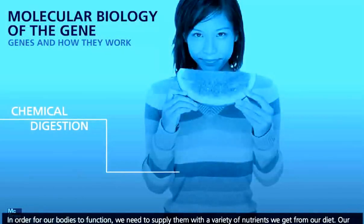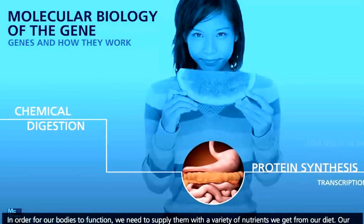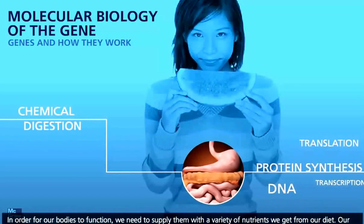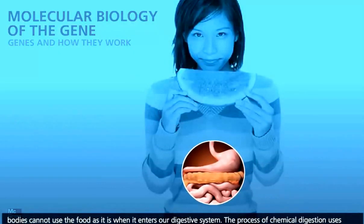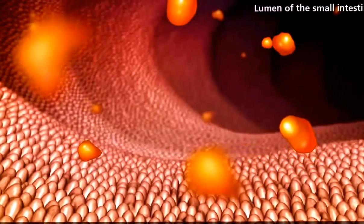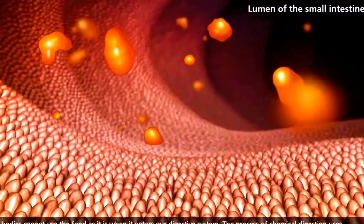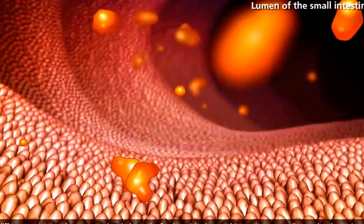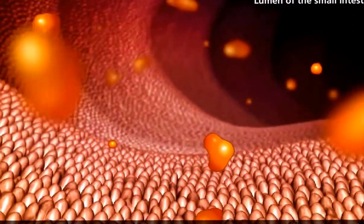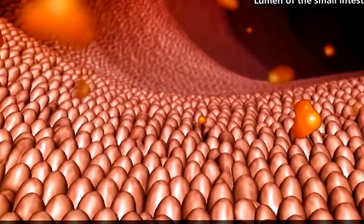In order for our bodies to function, we need to supply them with a variety of nutrients we get from our diet. Our bodies cannot use the food as it is when it enters our digestive system. The process of chemical digestion uses different proteins and enzymes to break down the food particles into usable nutrients our cells can absorb.